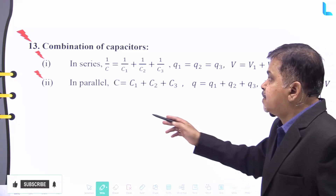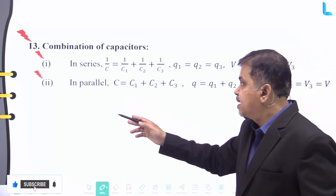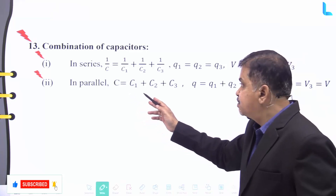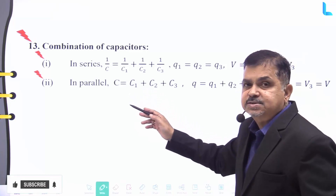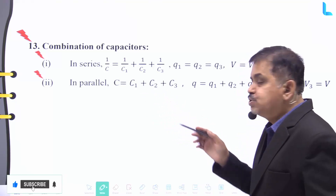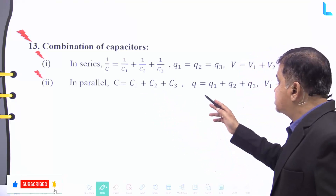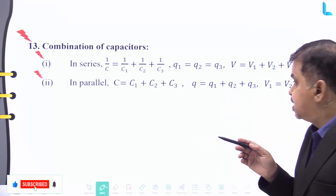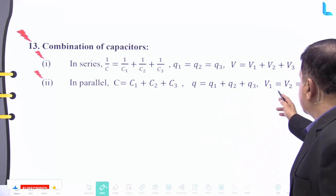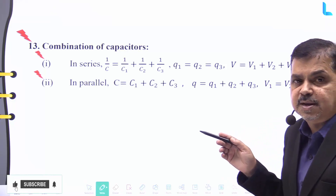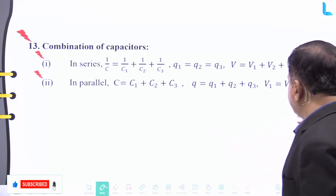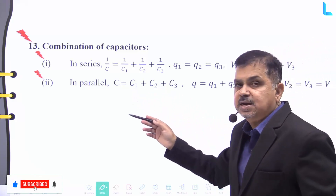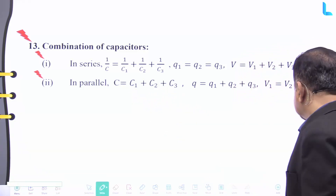For capacitors connected in parallel, the equivalent capacitance is C = C1 + C2 + C3. The total charge satisfies Q = q1 + q2 + q3, and the potential satisfies V1 = V2 = V3 = V. These are the combination formulas for capacitors in series and parallel.